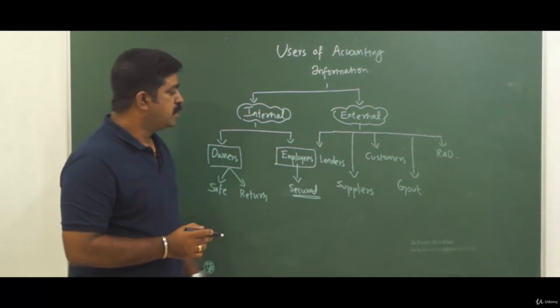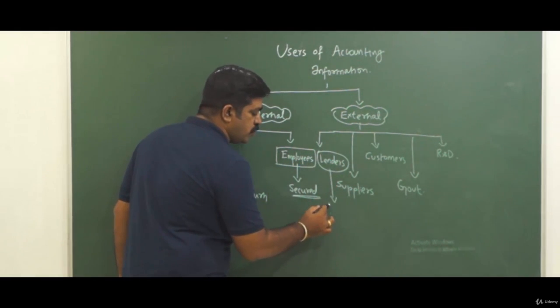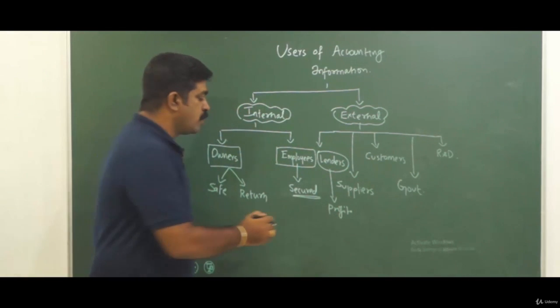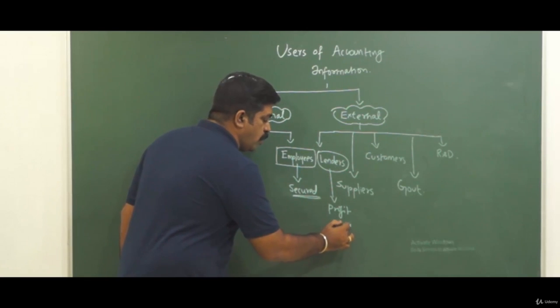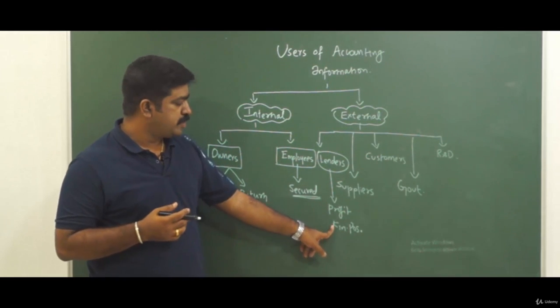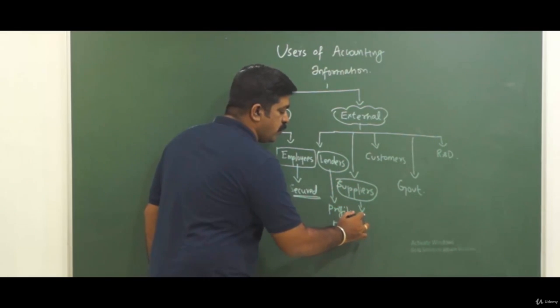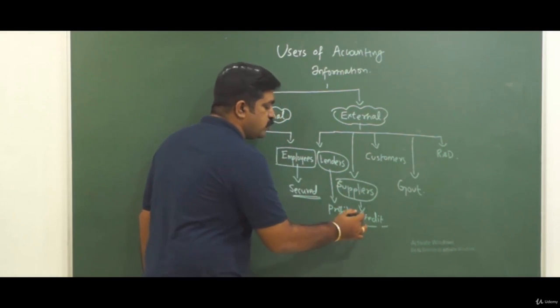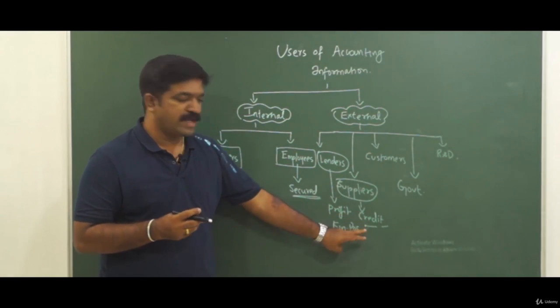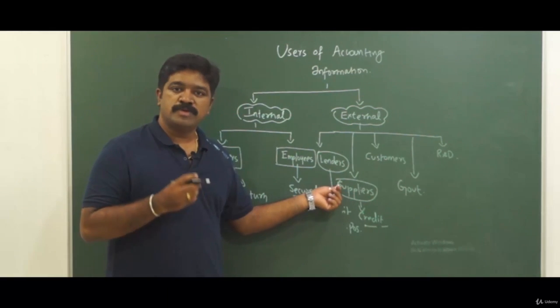Then we have external group. Lenders, as already discussed, lenders will be looking at the accounting information to know what is the profitability, what is the profit earning capacity of that business, what is their financial position. All those they can understand by looking at the financial statements or accounting information. Then suppliers will be looking at accounting information basically to take a call whether they should sell goods on credit to that business entity or not. By looking at the financial statement they'll be able to take a reasonable judgment whether they have adequate capacity to pay if goods are sold on credit or not.